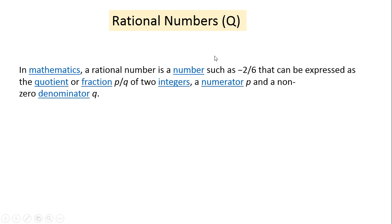Rational numbers are represented with capital Q. So what are rational numbers? In mathematics, a rational number is a number such as